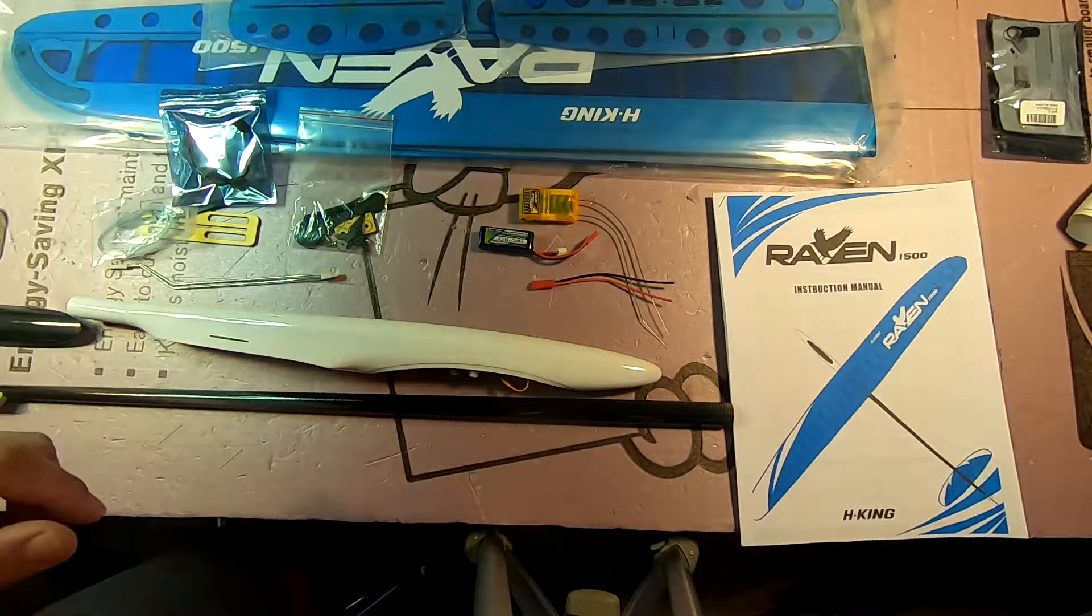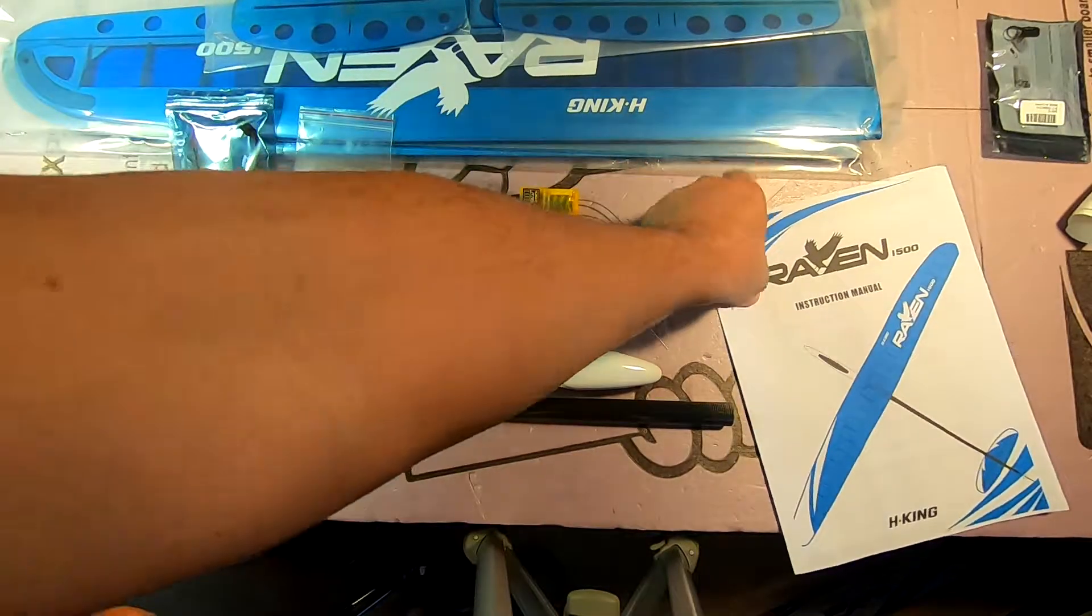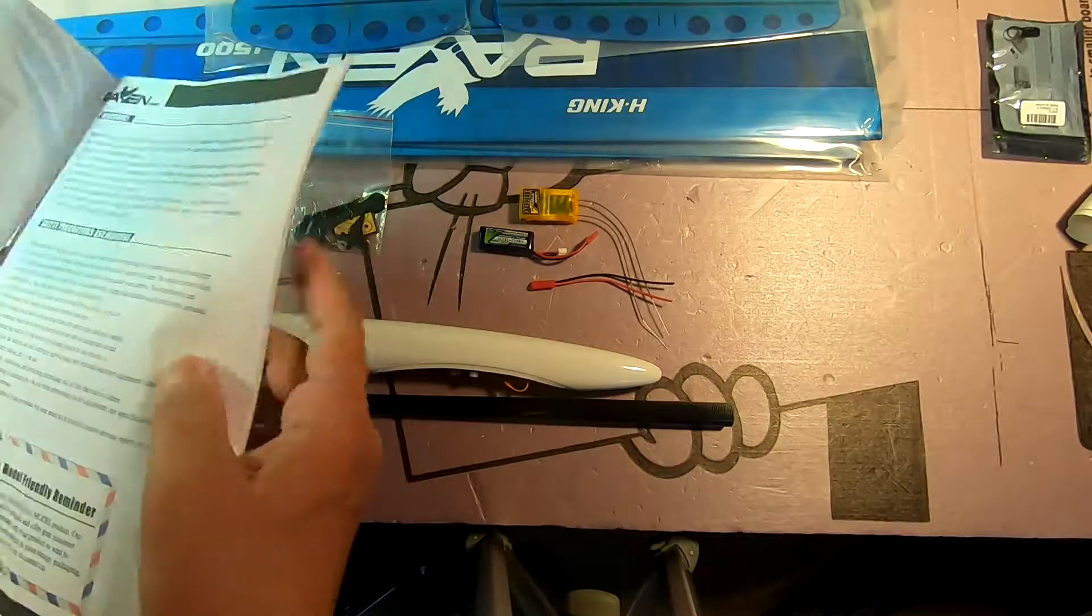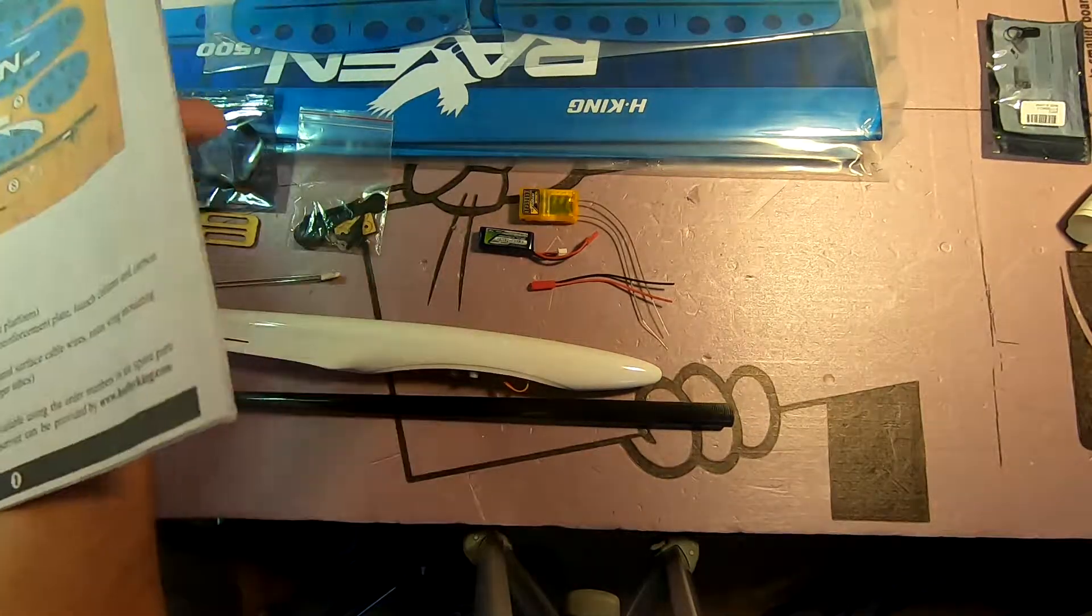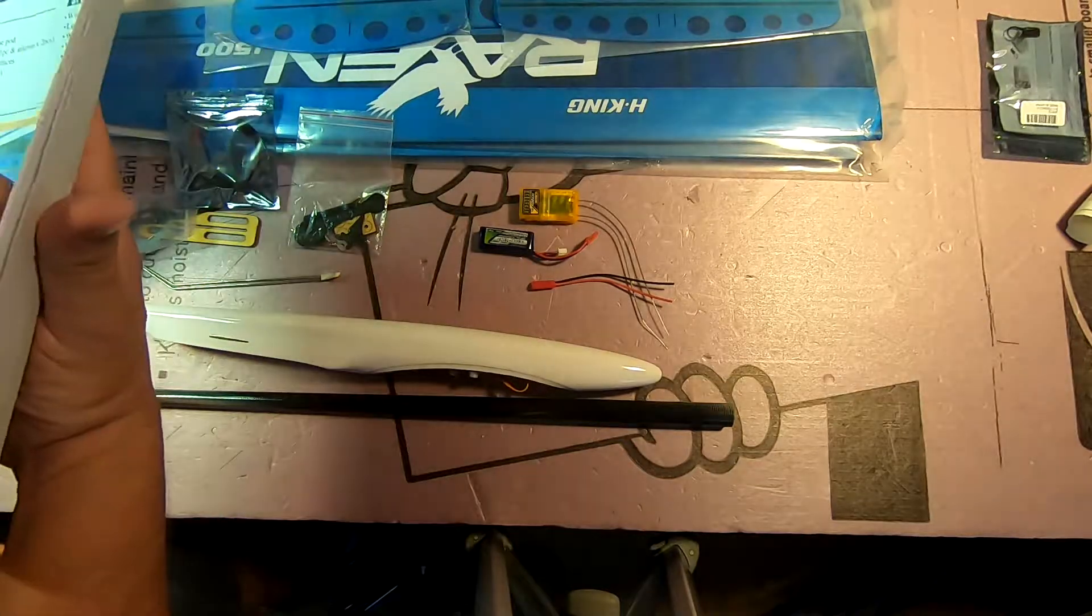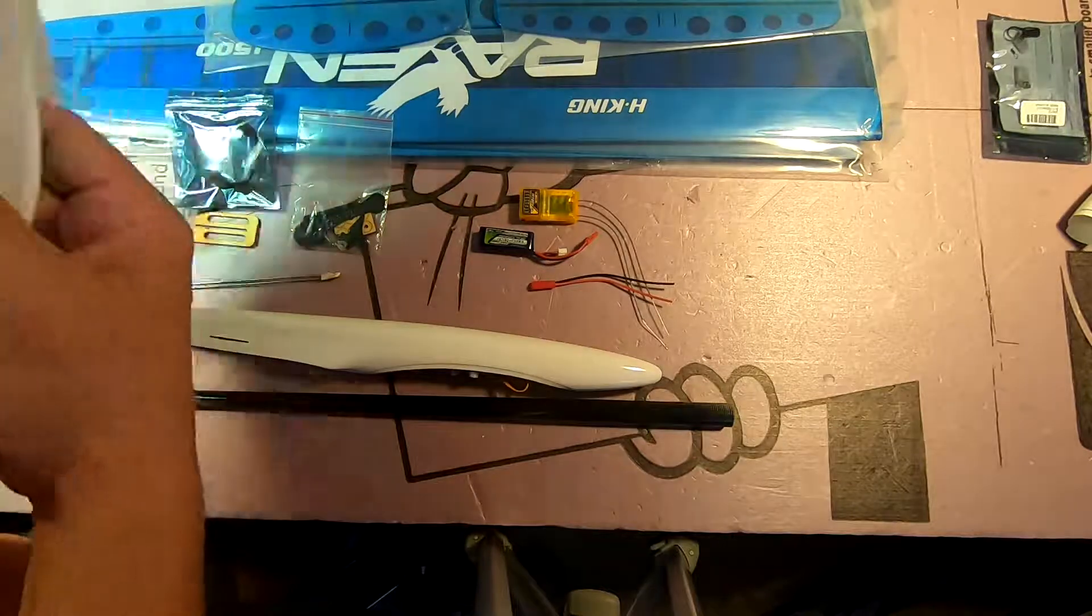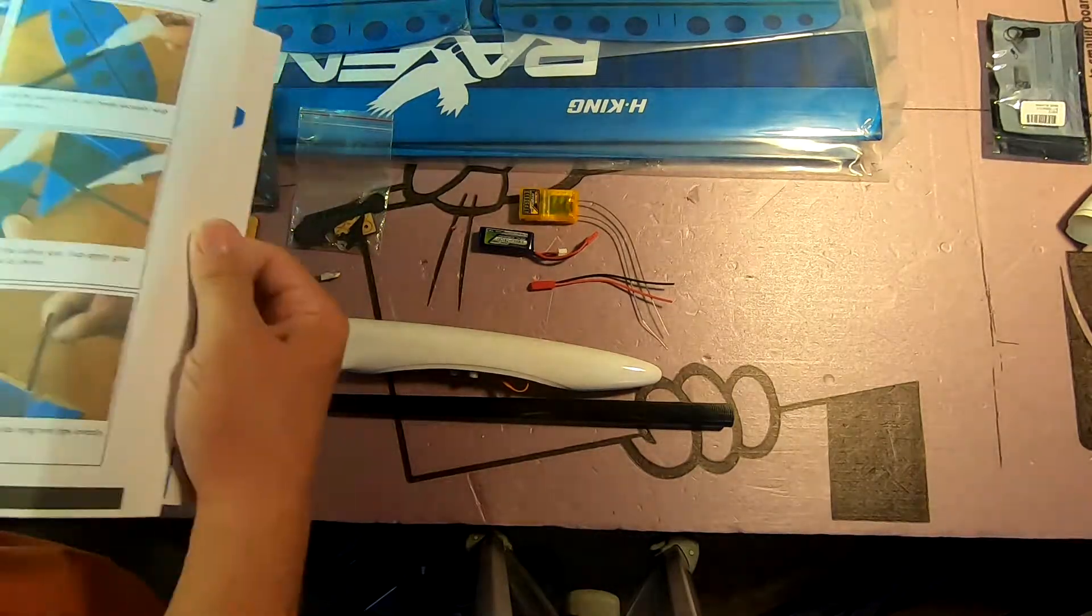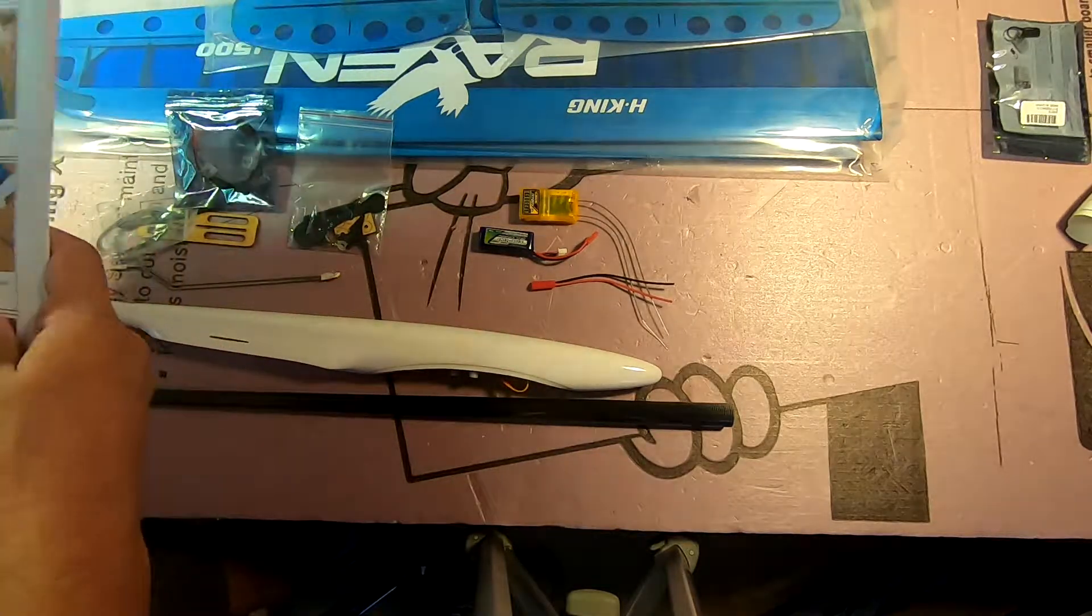Anyway, I'm going to get started. I'm going to go from the directions. I believe they have me assembling the wing first, or at least joining the wing halves as the wing is assembled. Nope, they start out with the tail section. So I'm going to go through this and film this process for you.